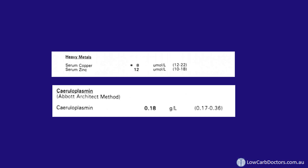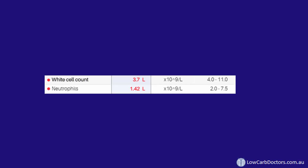Bariatric surgery can lead to a heck of a lot of deficiencies — worse with bypass procedures, but still very prevalent after a sleeve gastrectomy. Copper deficiency is one of these, and I've seen microcytic anemia related to copper deficiency before. I tested her copper and it was low. Ceruloplasmin is the better, more specific test for confirming copper deficiency, but it's also an acute phase reactant, so in states of inflammation we can't trust it too much. Neutropenia can also be a symptom of copper deficiency.